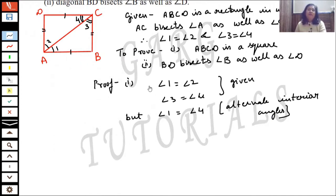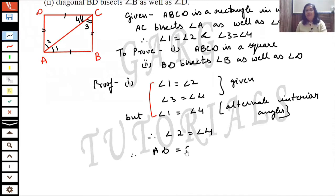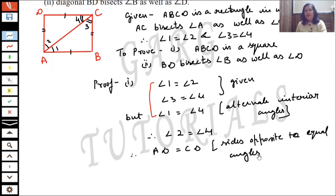We have angle 1 equal to angle 2 (given) and angle 1 equal to angle 4 (alternate interior angles). From both of these results, we get: therefore angle 2 is equal to angle 4.